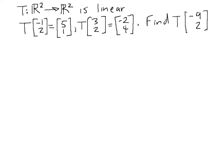And we know that T of [-1, 2] is [5, 1], T of [3, 2] is [-2, 4]. And what we'd like to do is figure out T of [-9, 2].